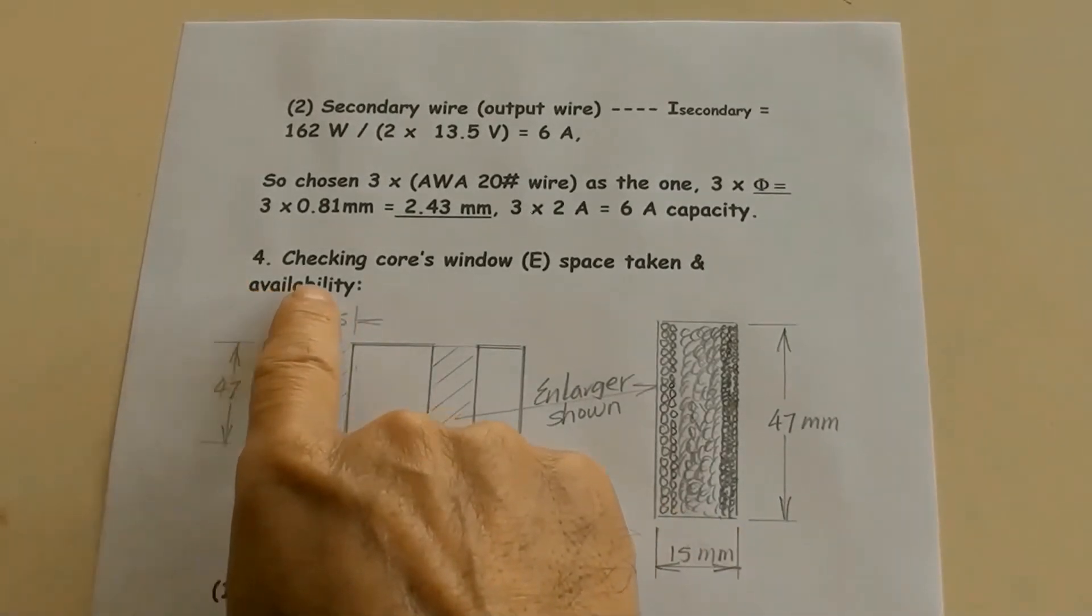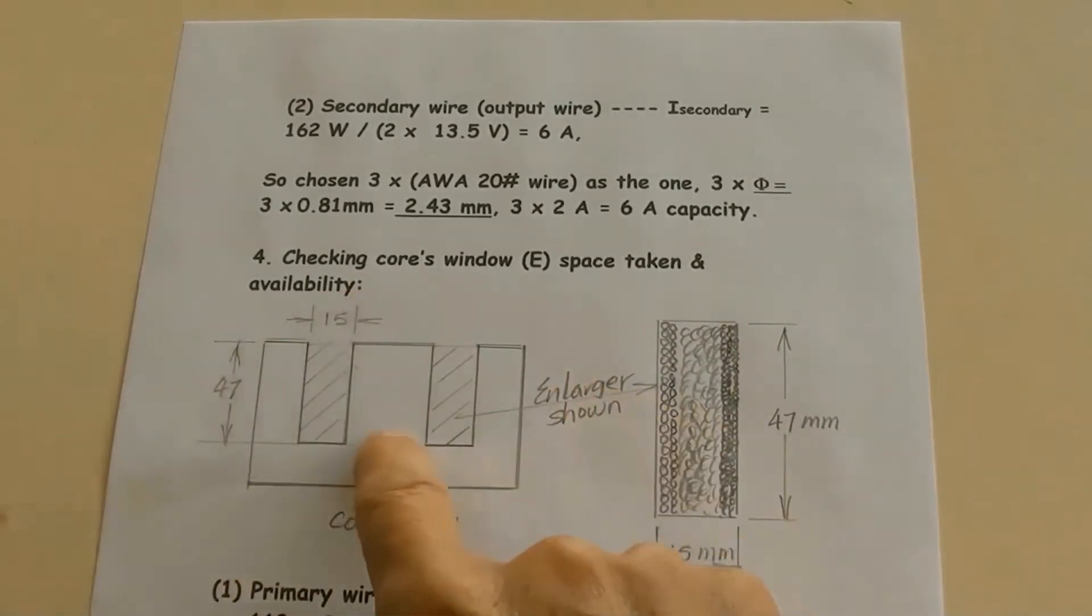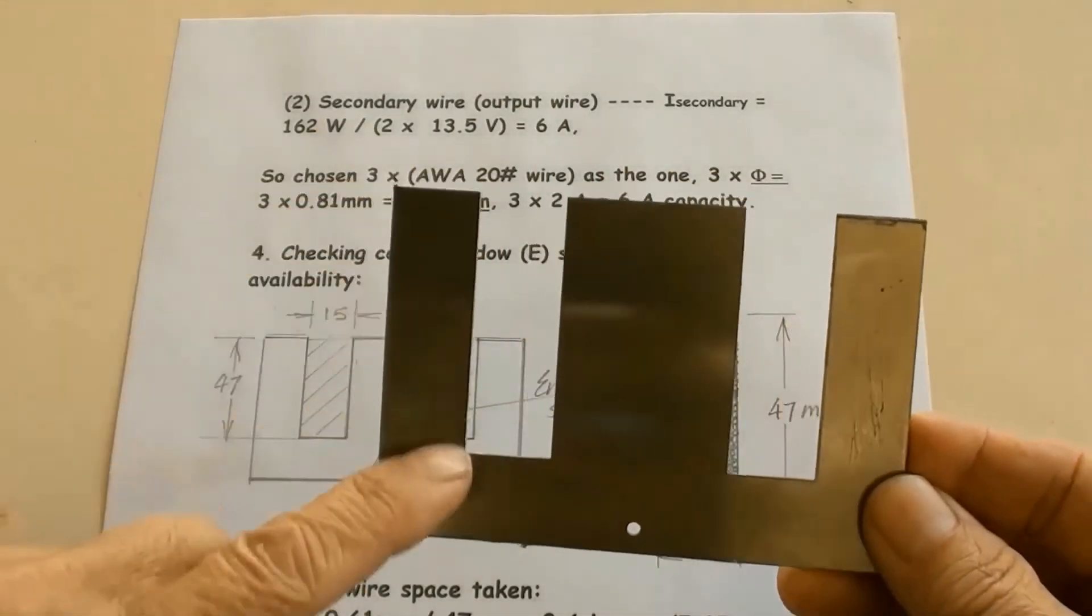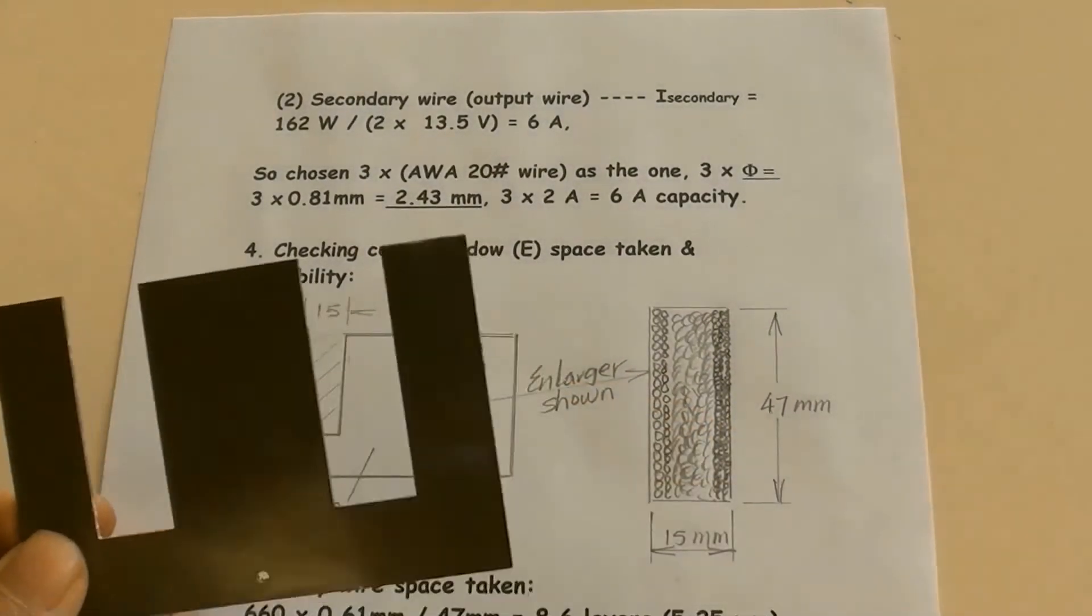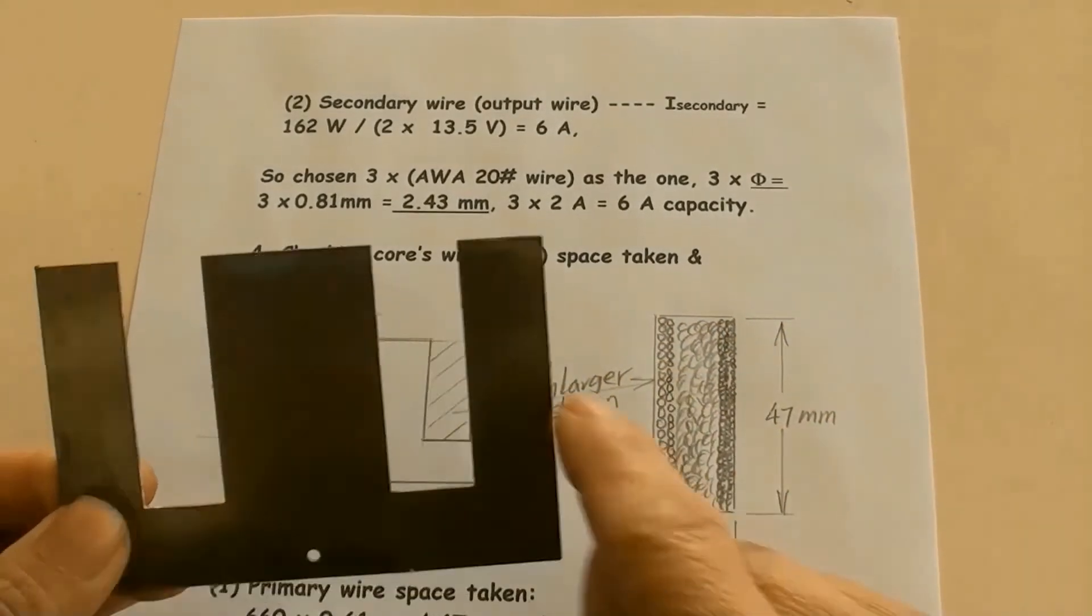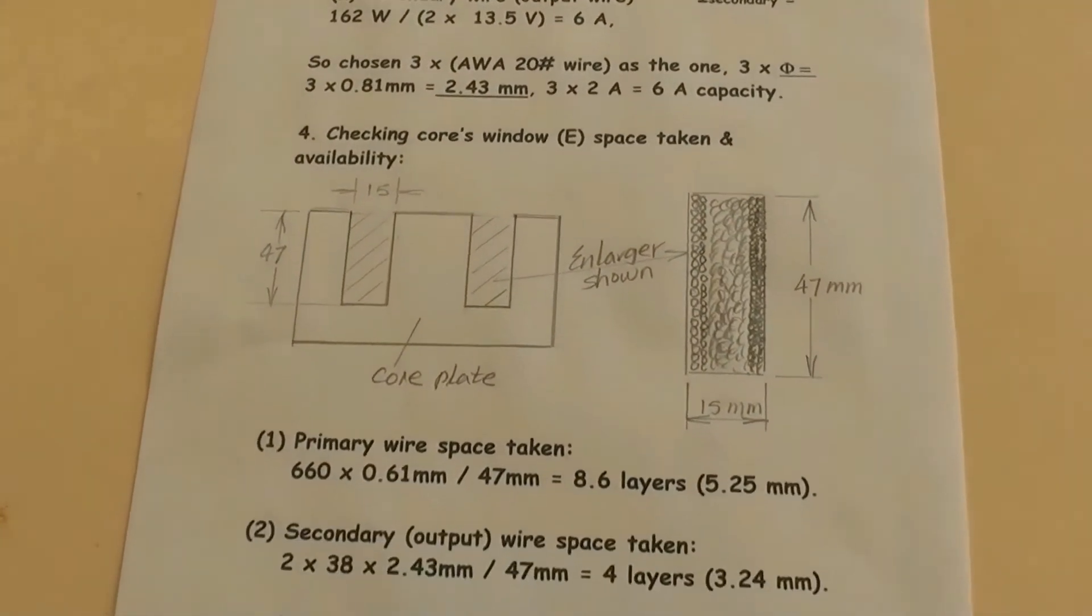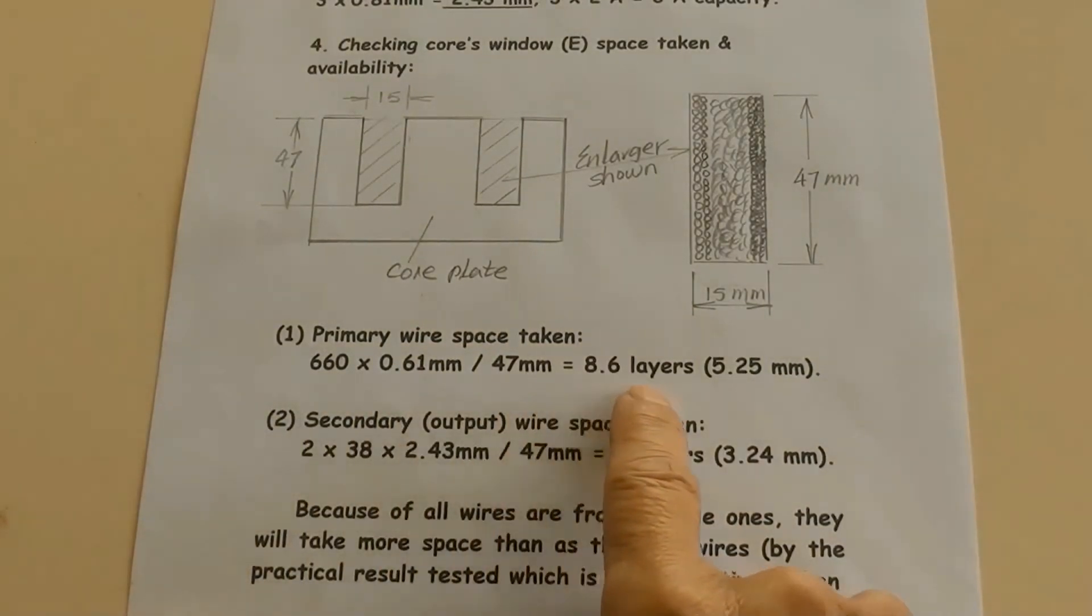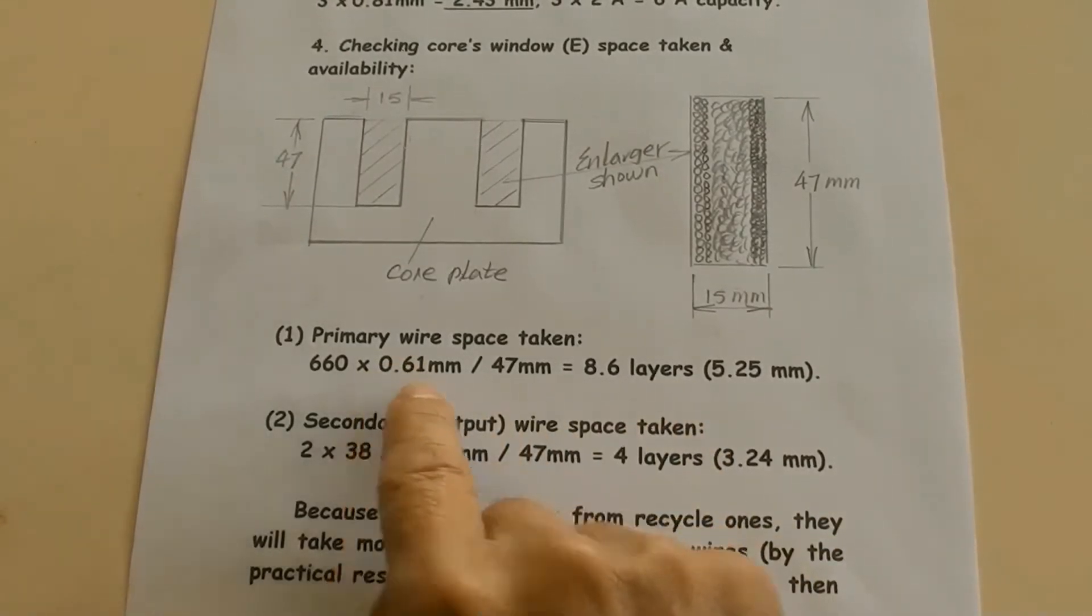Checking core window, space taken, and availability. This is real size, this is core plate. Here is windows depth of 47mm and its width of 15mm. This is an enlargement of core window showing its inside filled with winding wires. 47mm is here and 15mm is there. Primary wire space taken: 660 times 0.61mm over 47mm equals 8.6 layers, 5.25mm. This 5.25mm came from layers to 0.61mm.